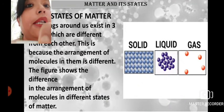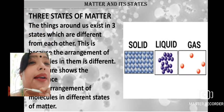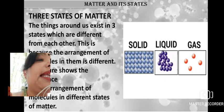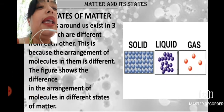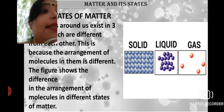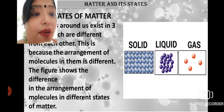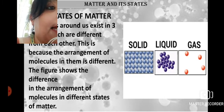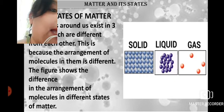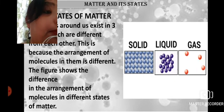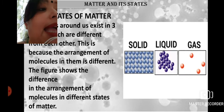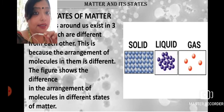The things around us exist in three states. They are different from each other because of the arrangement of the molecules between them. In the solid state, molecules are very closely packed. In the liquid state, molecules are not as closely packed as in solids and not as loose as in gases. In the gas state, the intermolecular space is the maximum.